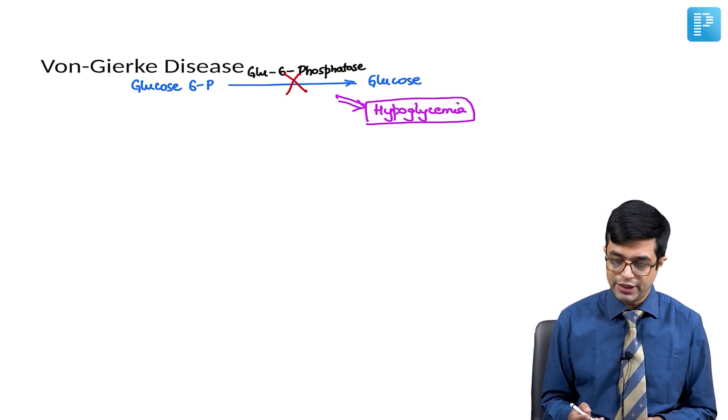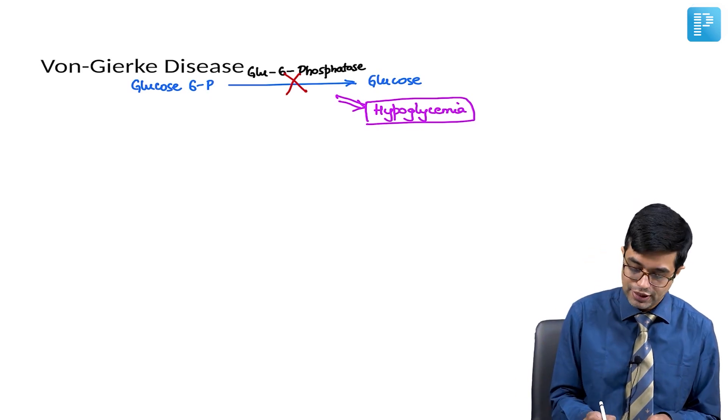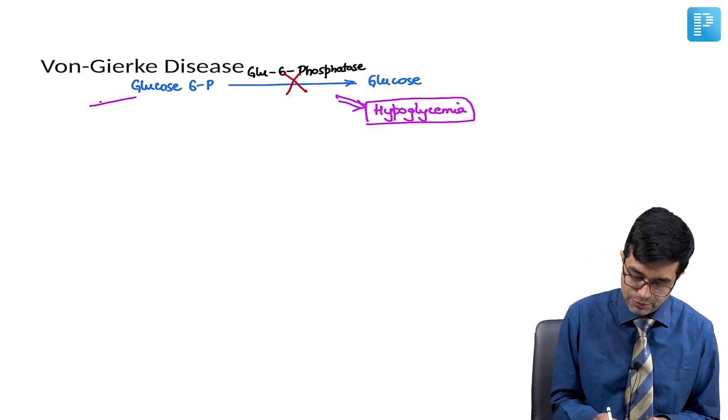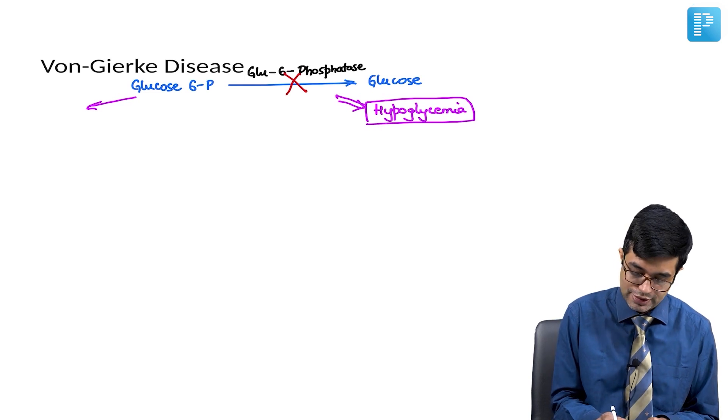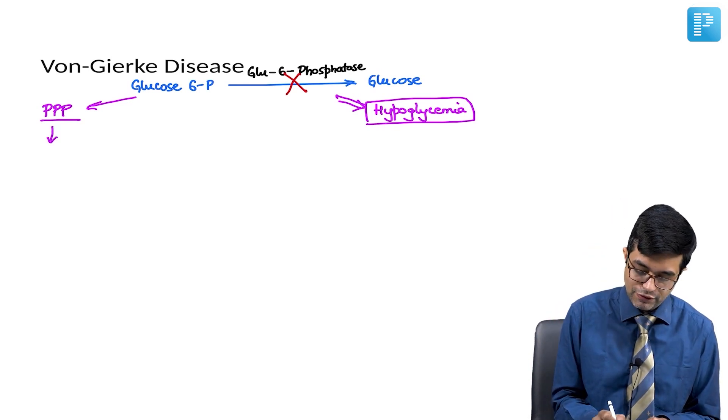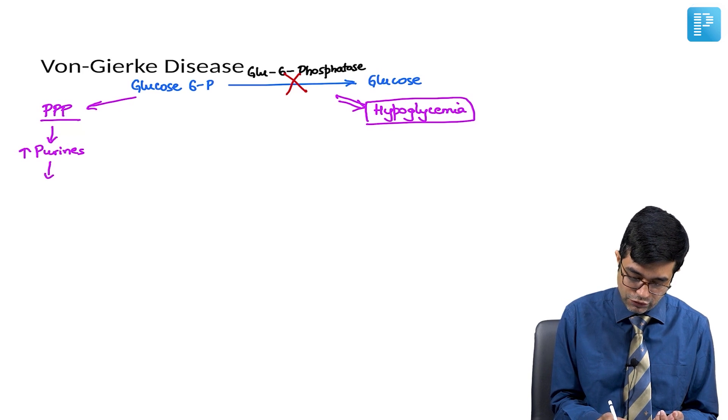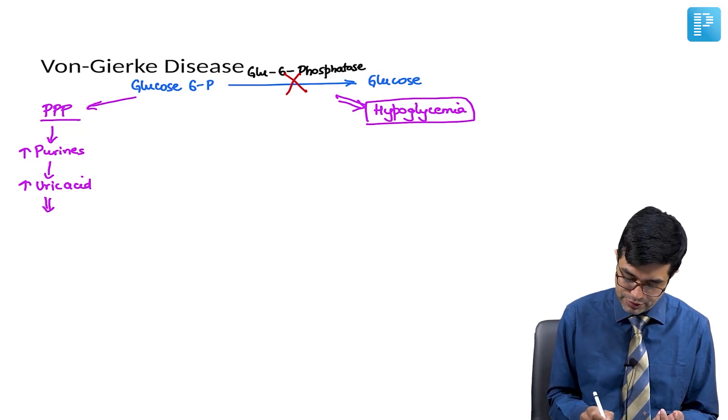Second thing, now glucose 6-phosphate is getting accumulated. It is not getting converted to glucose. So, what will happen? This glucose 6-phosphate will be diverted towards a pathway known as pentose phosphate pathway (PPP pathway). This pentose phosphate pathway will form more amount of purines. These purines when they degrade, they will get converted into uric acid. So, they will form higher amounts of uric acid.